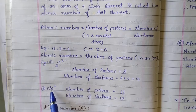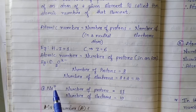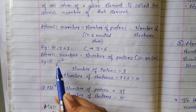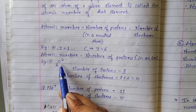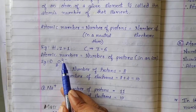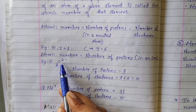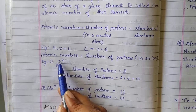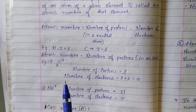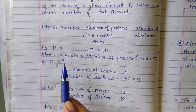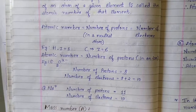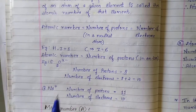This sodium has lost one electron. If you see this oxygen — two negative charges are there, which indicates that this oxygen has gained two electrons.